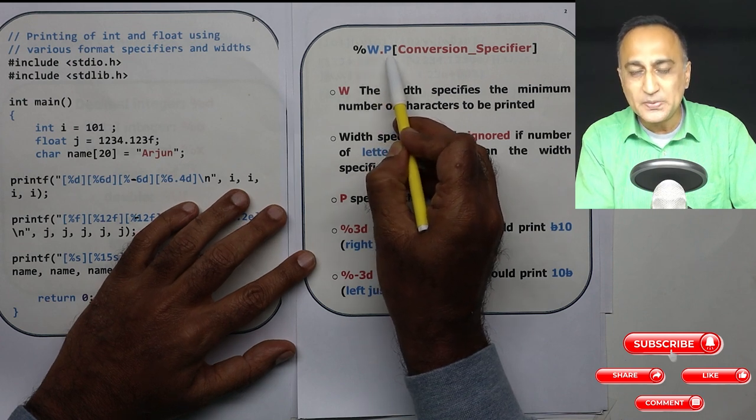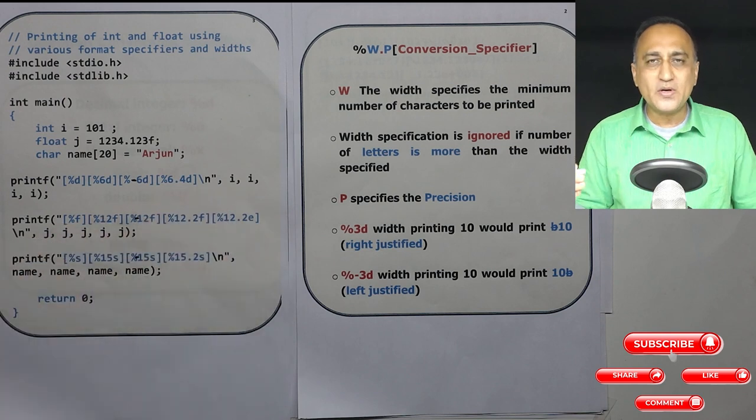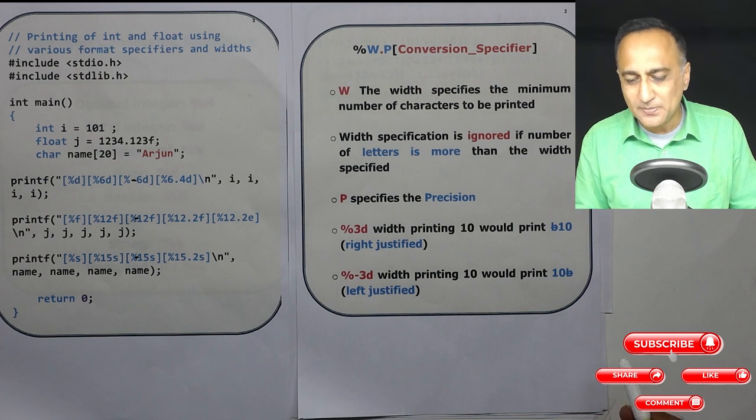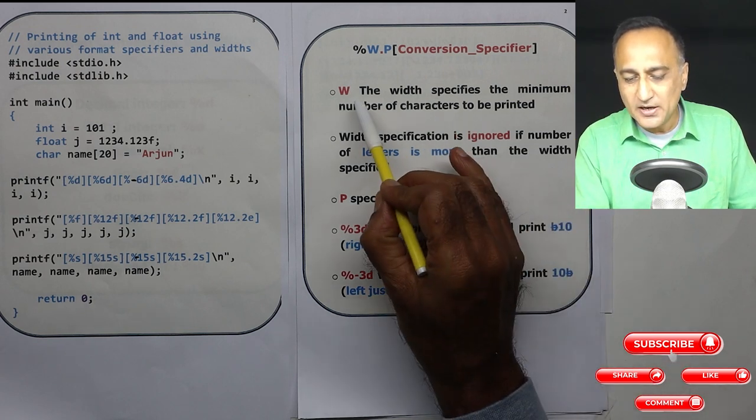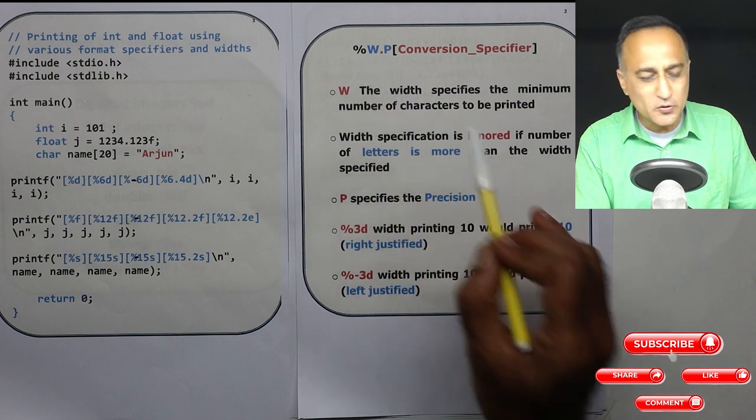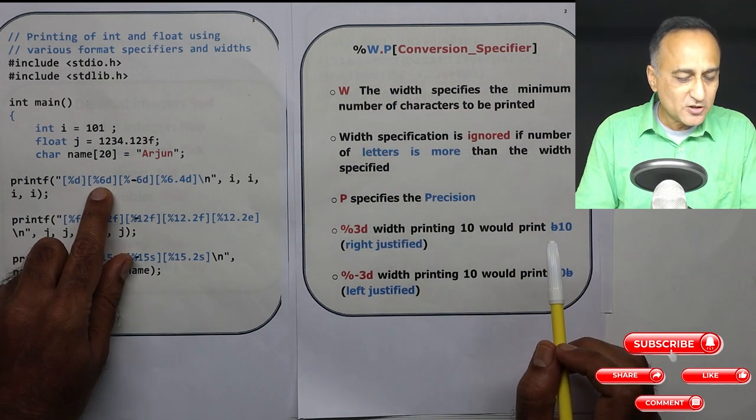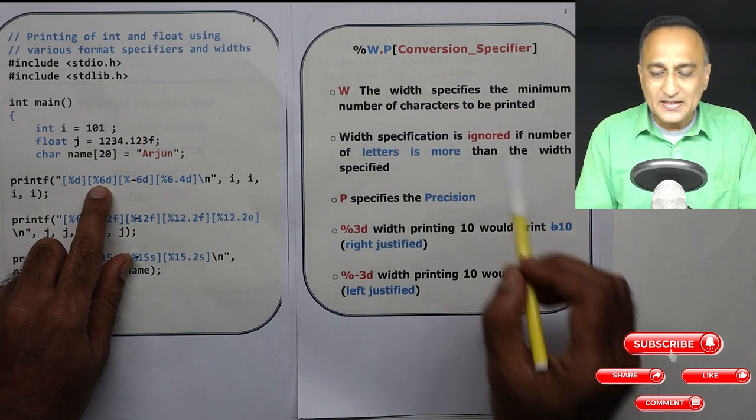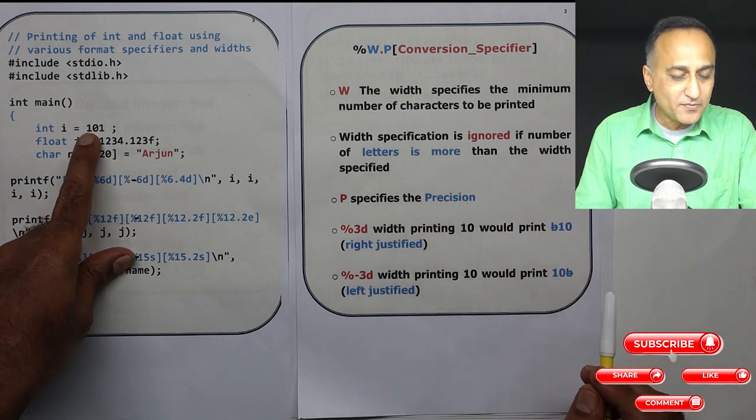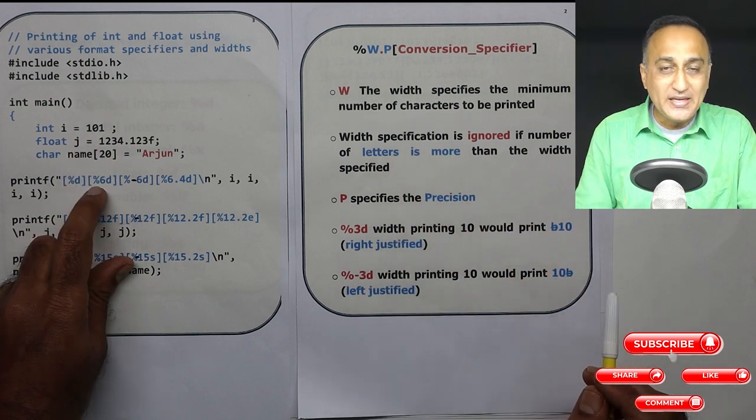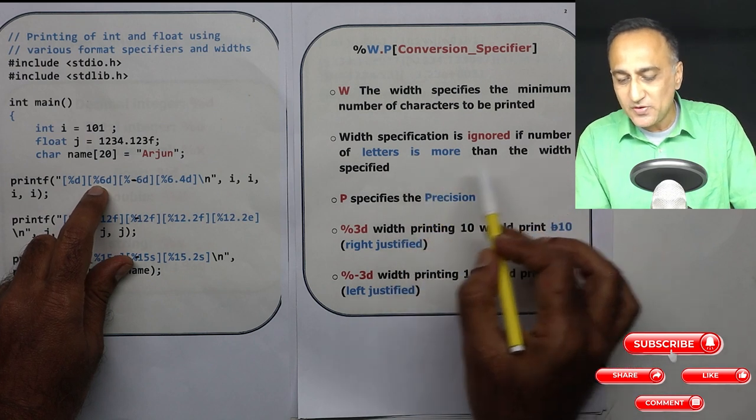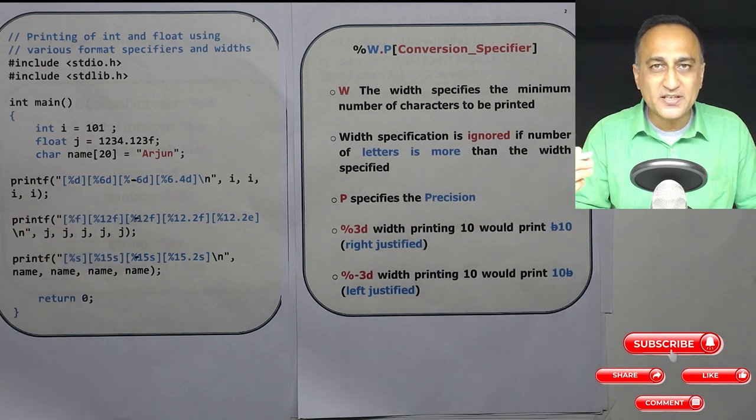So it will be W.P. Precision is meaningful only in case of single and double precision numbers. No point in trying to take characters and put two unless you want to do some crazy precision operations. W stands for the width. Suppose for this instead of %6d if I had put %1d what will happen is the width is one but the number of digits is three so it will ignore my width specification and it will print all the three digits.